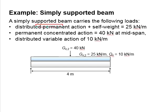The permanent action, which includes its self-weight, equals 25 kN per meter. There is a permanent concentrated action of 40 kN at the mid-span, and the variable action will be 10 kN per meter.